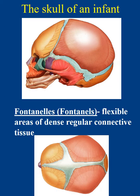Infant cranial bones are connected by flexible areas of dense regular connective tissue because the bones aren't yet big enough to fully surround the brain. These fontanels — known as the soft spots on a baby's head — allow for molding of the cranium so it can pass through the birth canal. Most babies born vaginally have a cone-head shape, but after a few days the curvature typically returns to normal.